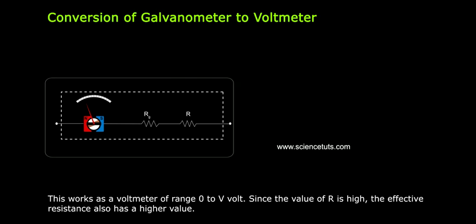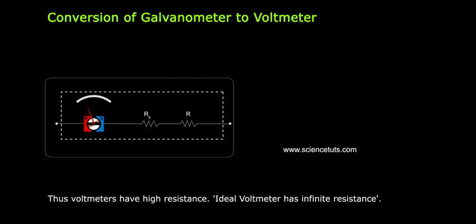Since the value of R is high, the effective resistance also has a higher value. Thus, voltmeters have high resistance. Ideal voltmeter has infinite resistance.